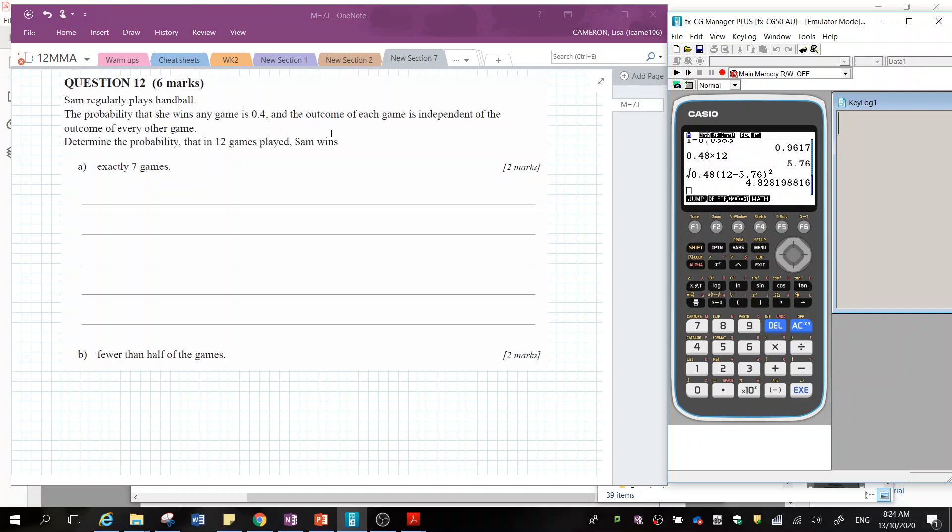So determine the probability that in 12 games, Sam wins. So exactly seven games means that seven is the number that we want. The number of trials is going to be 12. The probability that she wins is 0.4. And we are looking at BPD because we're looking at a single one. So I'm going to go over to my statistics function, distribution, binomial and BPD.